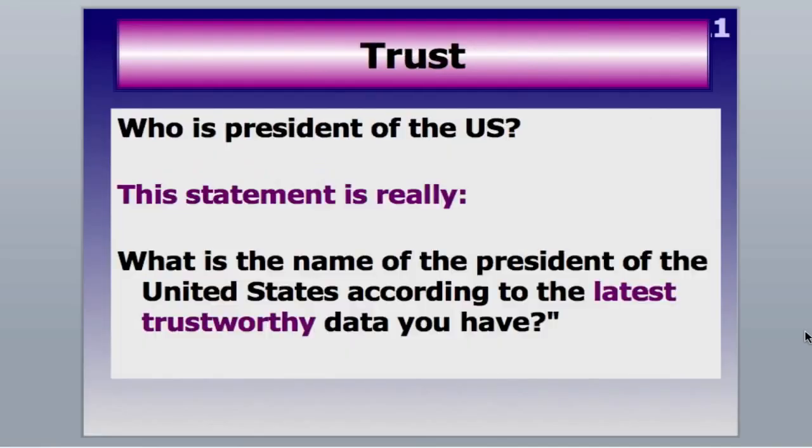Now we're at the very top of the layers of the semantic web, which brings us to trust. I can ask you a question: 'Who is the President of the United States?' What I'm really asking is: what is the name of the President of the United States according to the latest trustworthy data you have at this time?